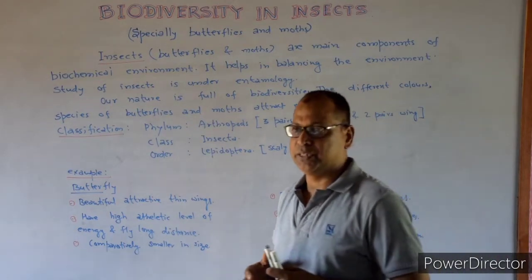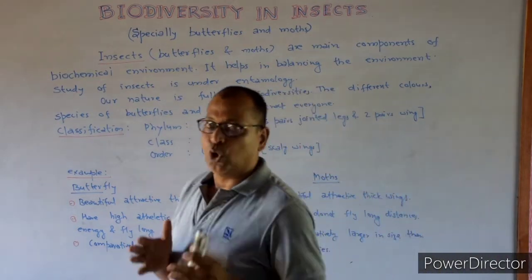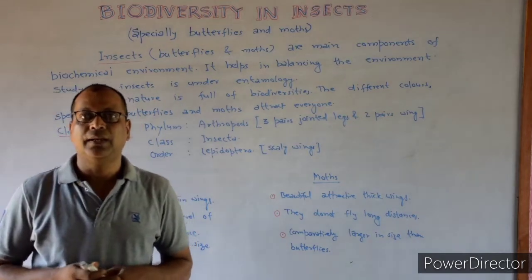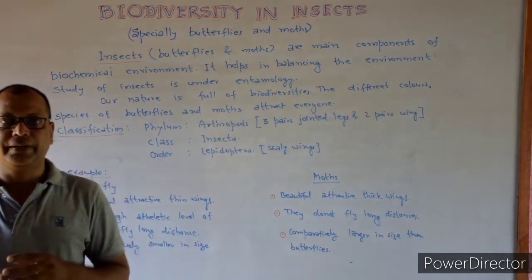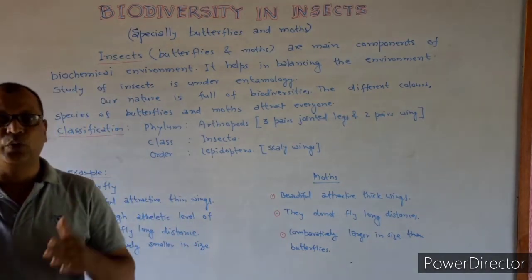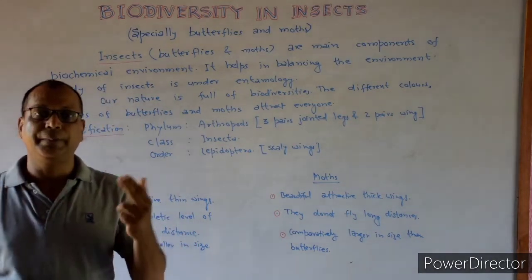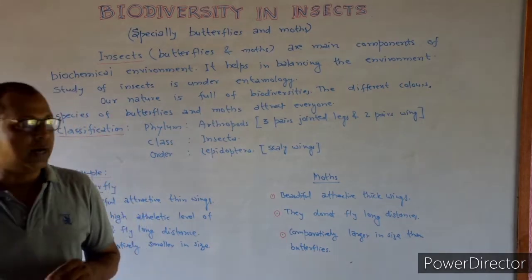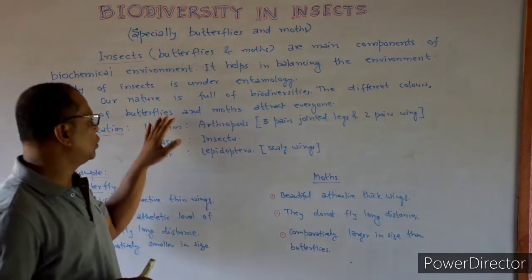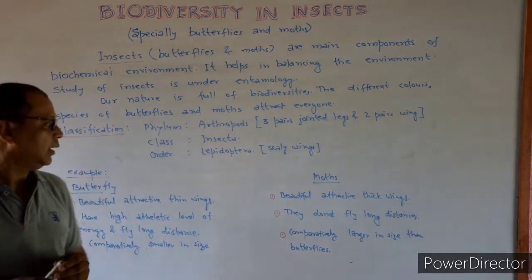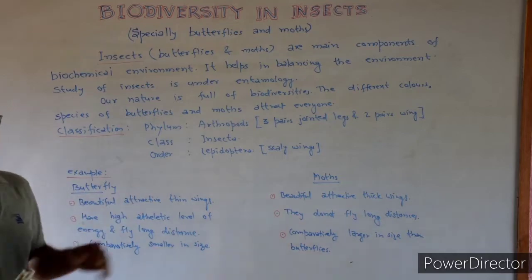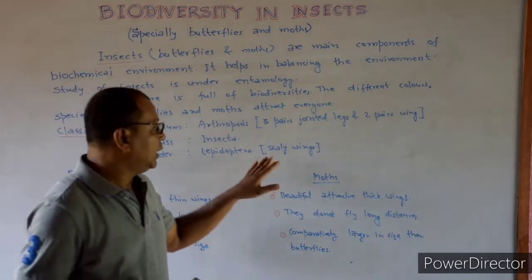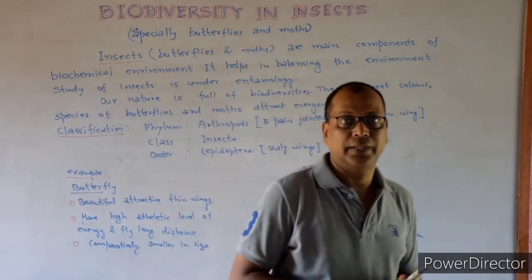Arthropoda means: 'arthro' means jointed, 'poda' means legs. The invertebrate animals which have 3 pairs of jointed legs and 2 pairs of wings are under Arthropoda, Class Insecta, Order Lepidoptera — meaning scale wings.